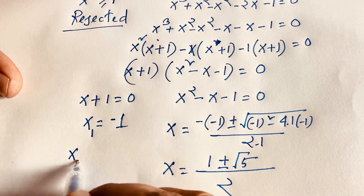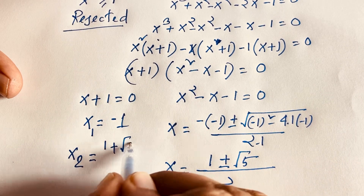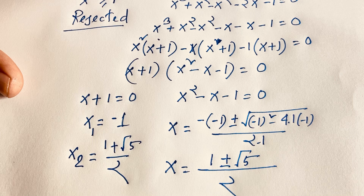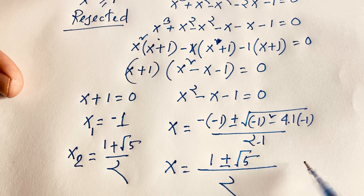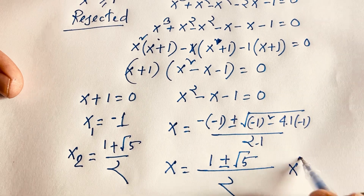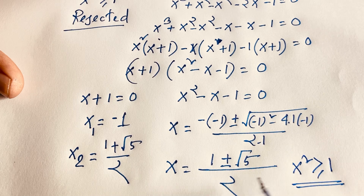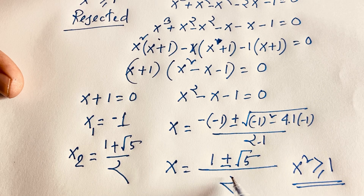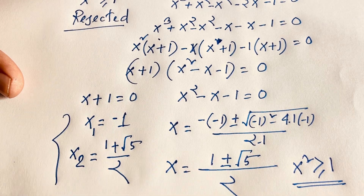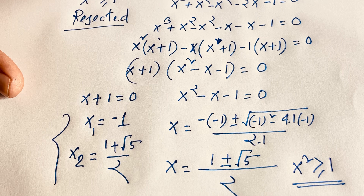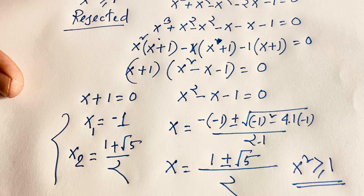So we have x1 equals negative 1, x2 equals 1 plus square root of 5 over 2, and x3 equals 1 minus square root of 5 over 2. Since x squared must be greater than or equal to 1, and 1 minus square root 5 over 2 is a negative value that does not satisfy this condition, x3 is rejected. Our final answers are x equals negative 1 and x equals 1 plus square root of 5 over 2.